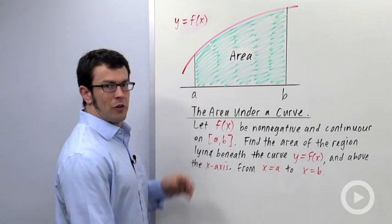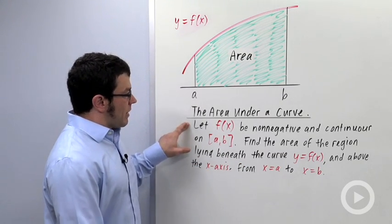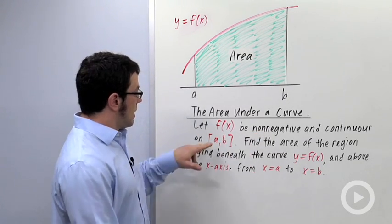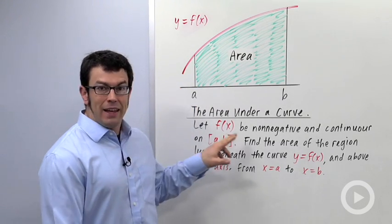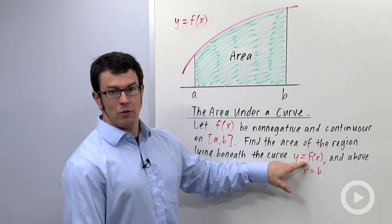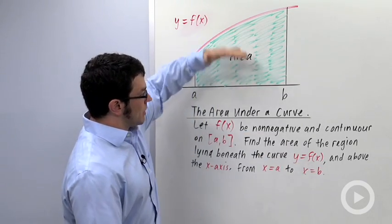Let's start with the area under the curve problem. Let f(x) be a non-negative and continuous function on the interval [a,b]. That's what we have drawn here. Find the area of the region lying beneath the curve y = f(x), so below this red curve.